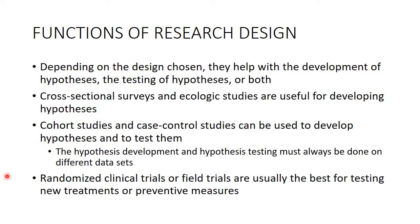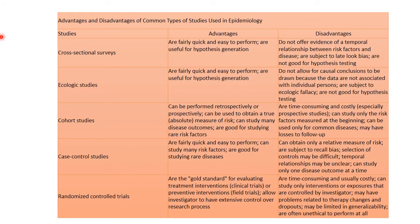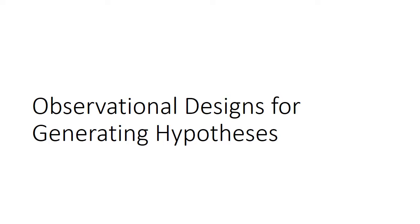Randomized controlled trials and field trials are best for testing a hypothesis, including new treatments or preventative measures. The strength of evidence for a causal relationship is greatest with randomized controlled trials, less strong with cohort or case-control studies, and cross-sectional or ecological studies can really only show associations. This reference table shows the advantages and disadvantages of each study type, which we'll discuss in more detail as we move forward.